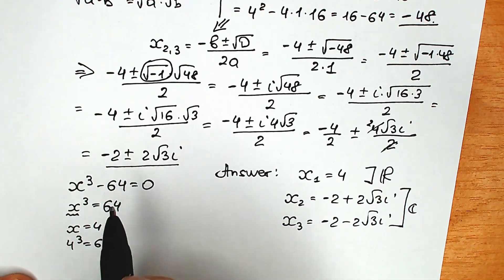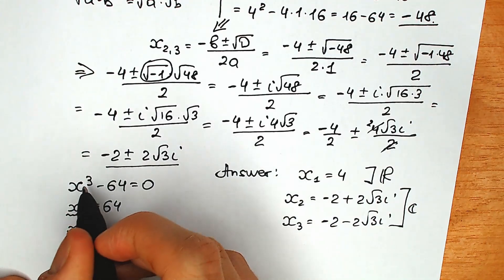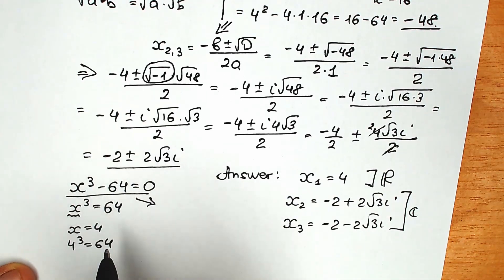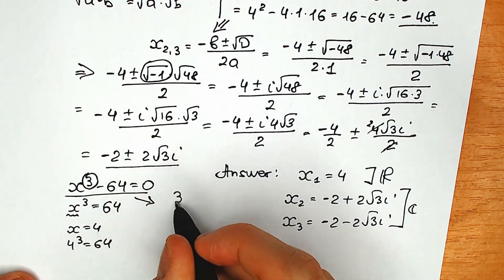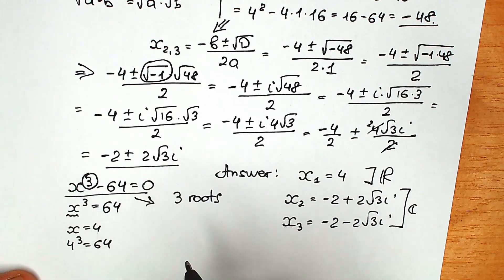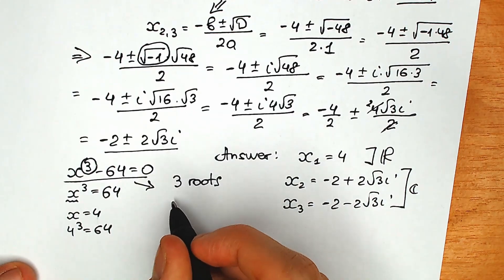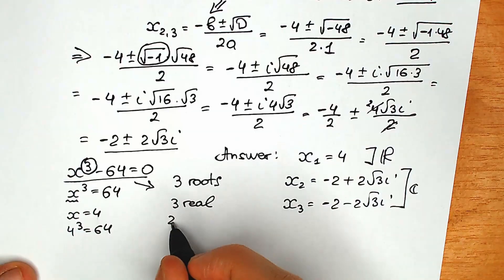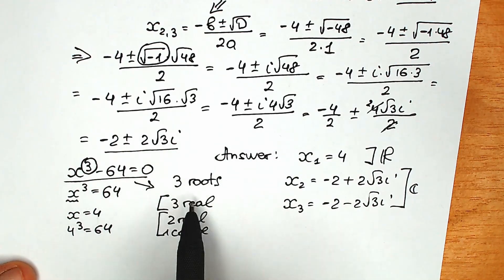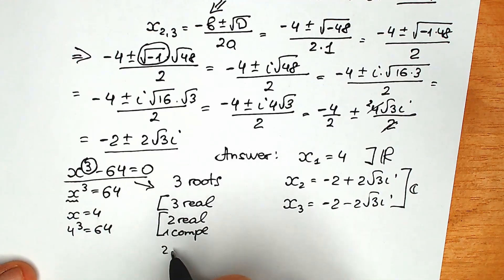Here are a few hints. First, you need to identify the highest power. In x-cube minus 64, the highest power is 3. So it means we will have exactly 3 roots. We don't know in advance how many are real versus complex — it could be 3 real roots, or 2 real and 1 complex, or 1 real and 2 complex — exactly the case we have here.